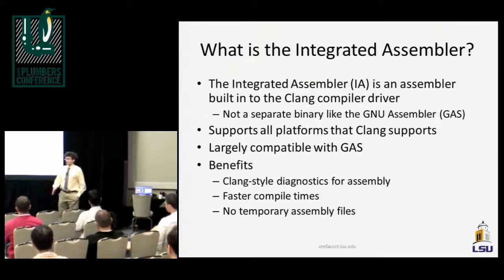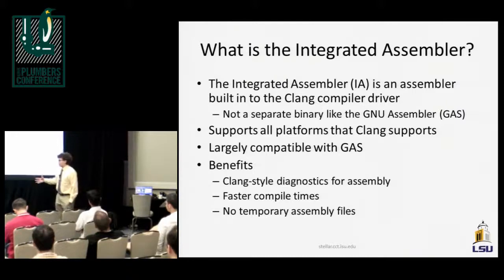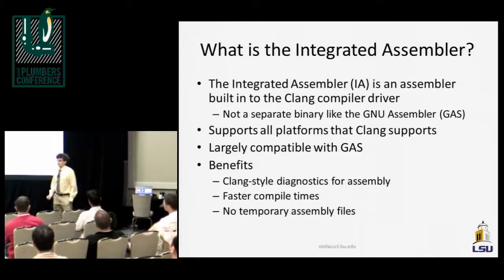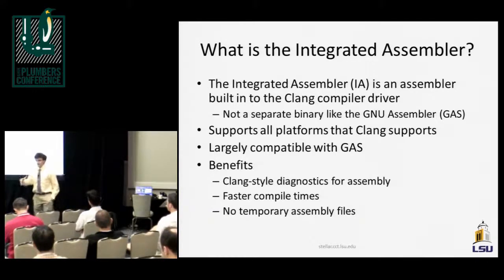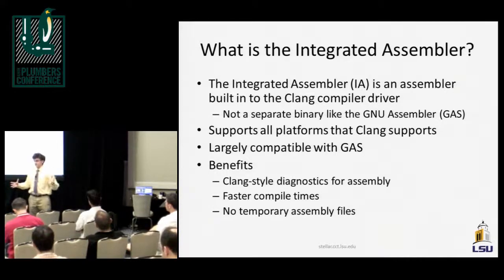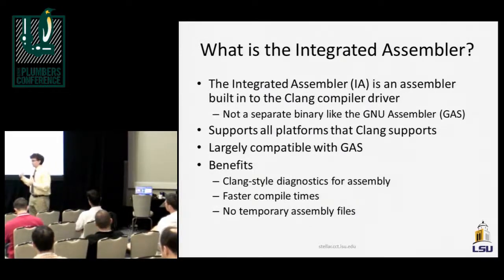There's nothing currently in Clang that gives you more optimizations when you turn on the integrated assembler. But in the future, some work can be done to provide more optimizations, simply because the assembler has a ton more information — it has access to everything the compiler knows, including the AST and the entire compilation process. Whereas the GNU assembler just gets your assembly file and is essentially dumb in that sense.